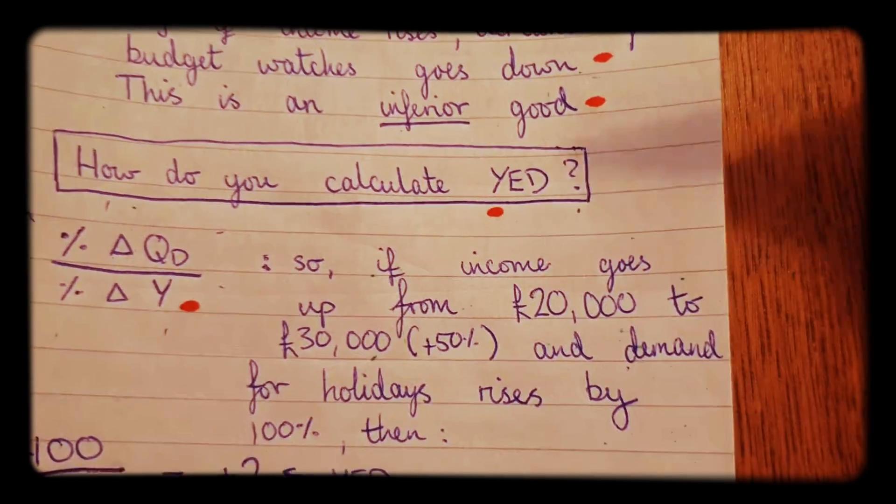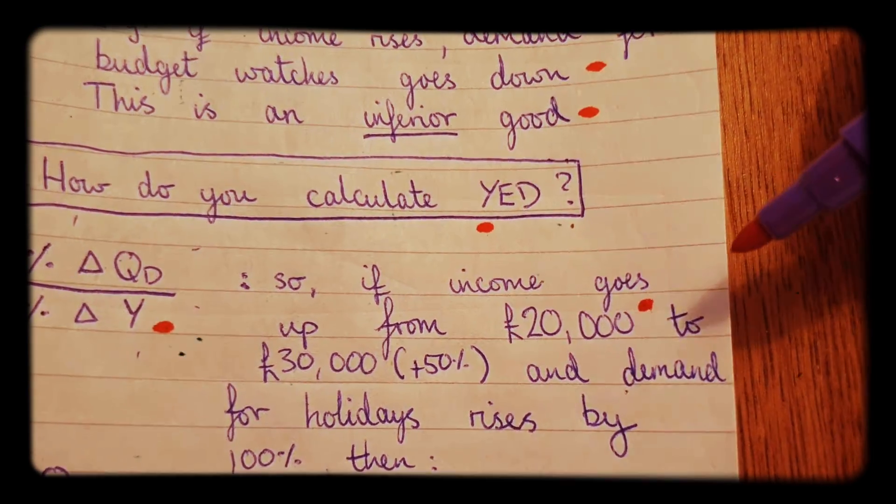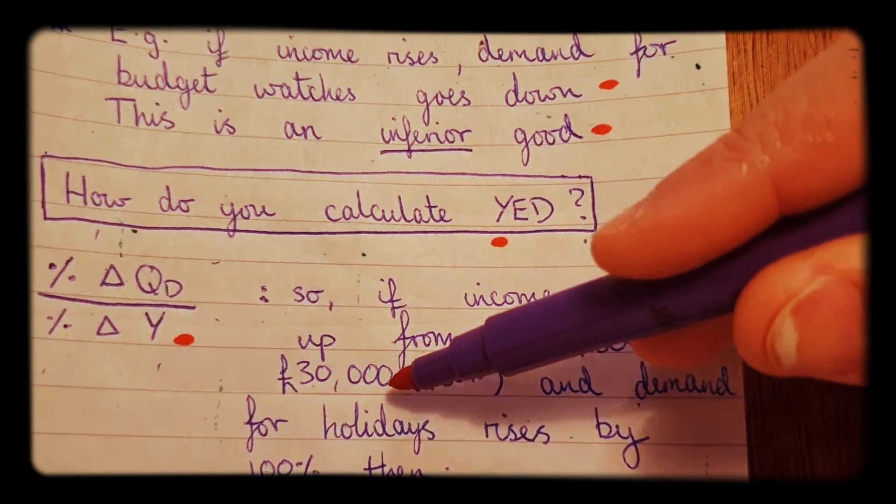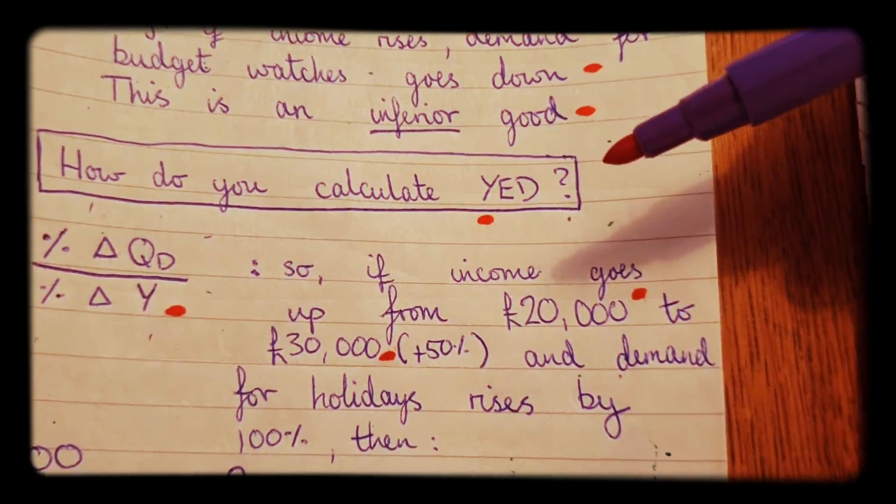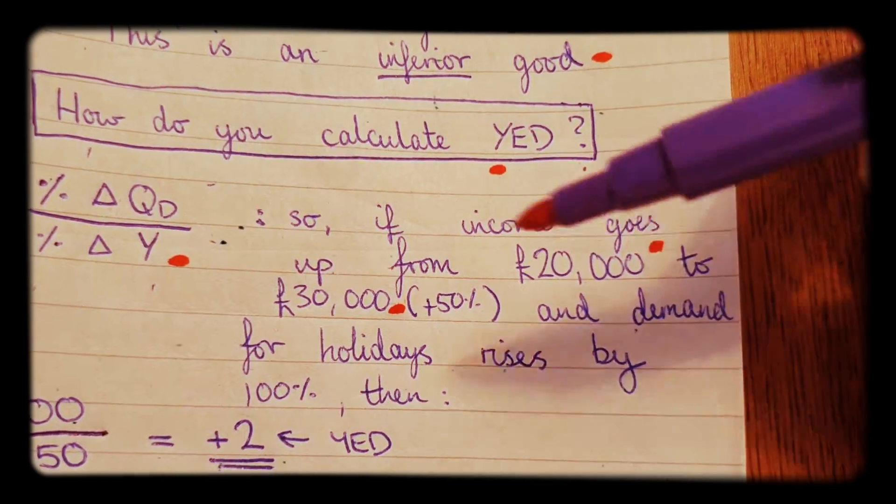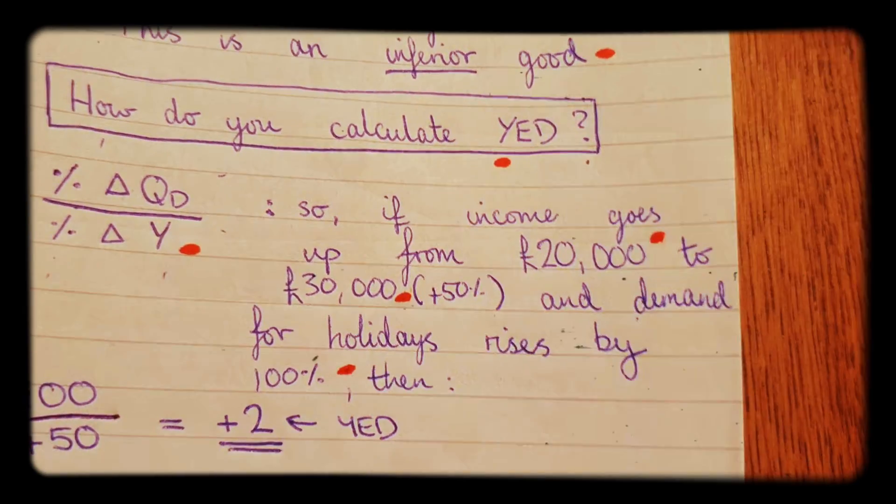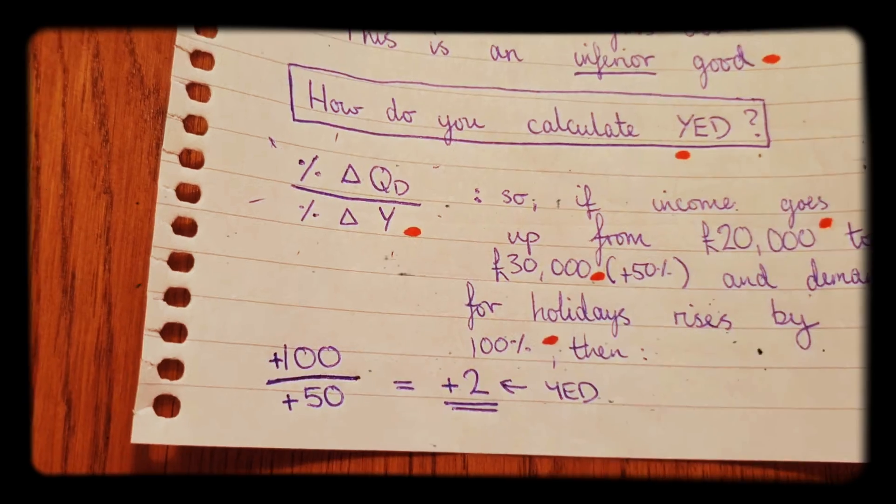Let's say for example if incomes go up from £20,000 a year to £30,000 a year, which is a 50% increase in income, and let's say demand for holidays abroad rises too and that goes up by 100%, then this is how you would calculate YED.